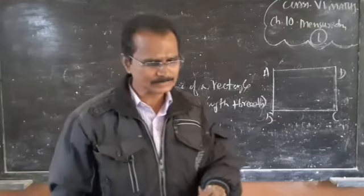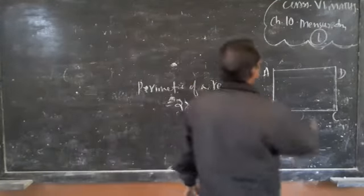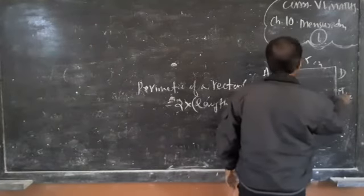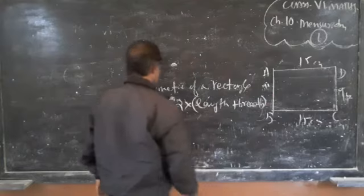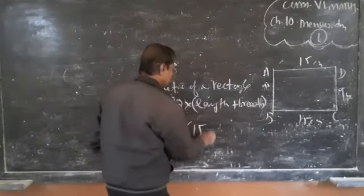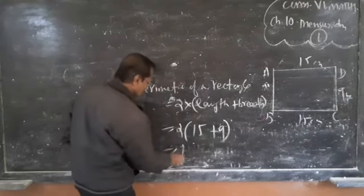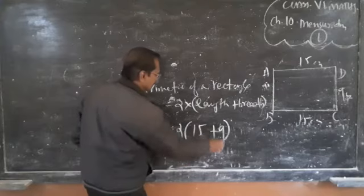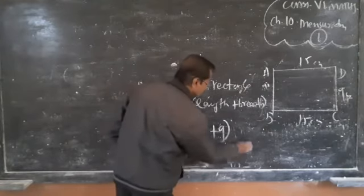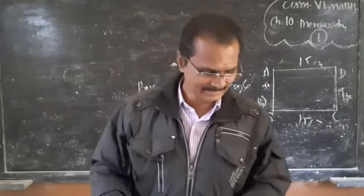Let's examine another example with 15 centimetres and 9 centimetres. To find the perimeter: 2 into (L + B), where length is 15 cm and breadth is 9 cm. So 2 into (15 + 9) = 2 into 24 = 48 centimetres. That is the perimeter of the rectangle.